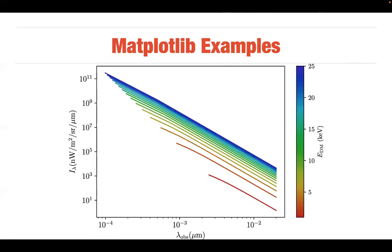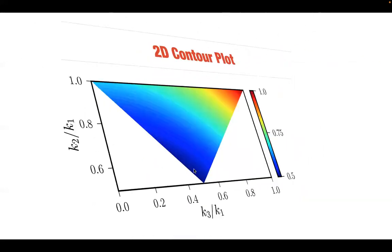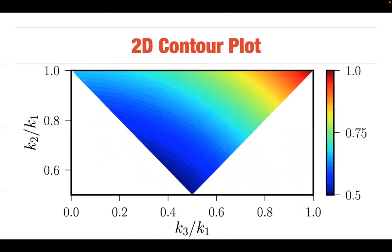Here's a first example of what Matplotlib can do. This is a plot I use in my own research — some spectral intensity as a function of observed wavelength lambda for dark matter energy. Another example is contour plots, which I also use in research. Matplotlib can do all of this.